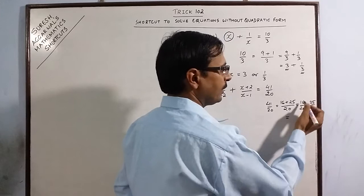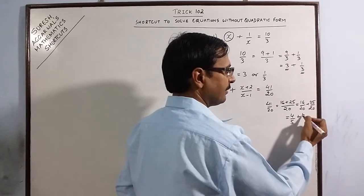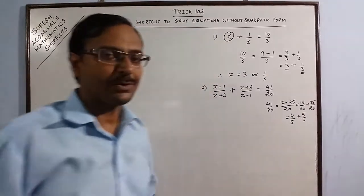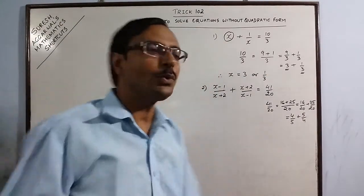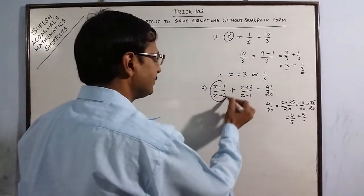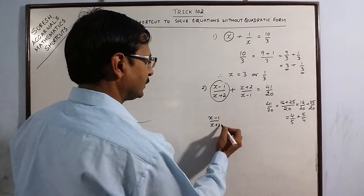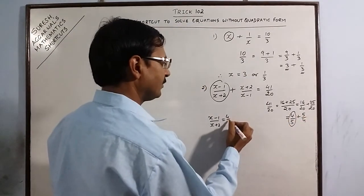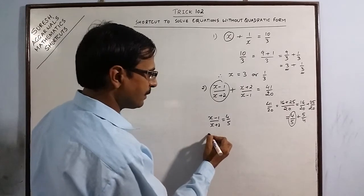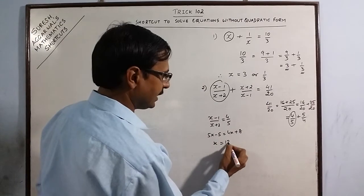Now, if you split the denominator like this, this will come out to be 4 upon 5 and this is 5 upon 4. Now, see you have the sum of two numbers which are reciprocals of each other. So, what to do now is, just take the first term, x minus 1 upon x plus 2 and put it equal to the first term here, 4 by 5. So, by cross multiplying this, you get your first solution as 13.